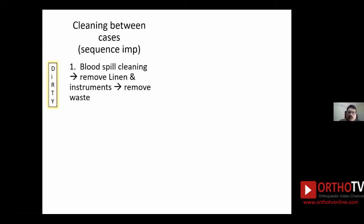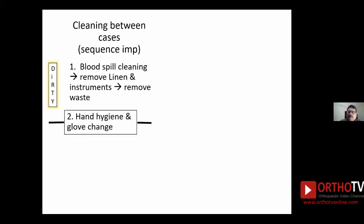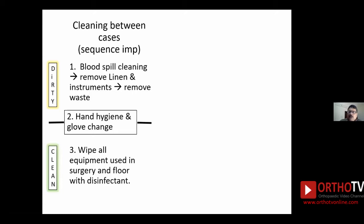Cleaning between cases is very critical. There are two sections: the dirty part and the clean part. Once the patient is shifted out, first clean blood spills, then remove linen and used instruments, then remove waste — this sequence is very important. The dirty activities have to be completed first. After this, the cleaning person should remove gloves, perform hand hygiene, wear a different set of gloves, and then continue with the clean part: wiping all equipment used in surgery — OT table, lights, trolleys, instrument trolleys, anesthesia machine, medication area — and the floor with disinfectant.